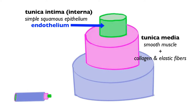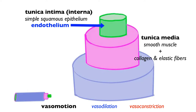The smooth muscle of the tunica media allows for vasomotion of blood vessels — adjusting the diameter of the lumen. If the diameter gets larger, that is vasodilation; if the diameter gets smaller, that is vasoconstriction. Vasodilation increases the volume of a blood vessel, which accordingly decreases pressure within it. As volume increases, pressure goes down; as volume decreases, pressure goes up. So when a blood vessel vasodilates, pressure decreases; when it vasoconstricts, pressure increases.